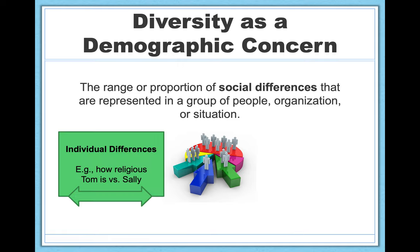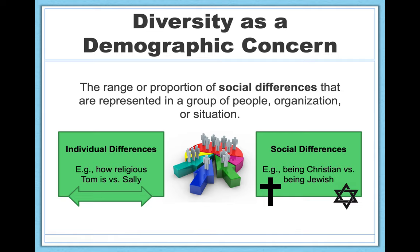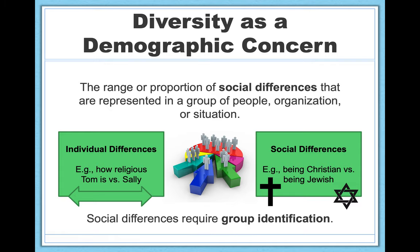So what do I mean by social differences? You've probably heard the term individual differences before, which is a dimensional approach to understanding differences between people. For example, how religious Tom is on a scale of one to ten versus how religious Sally is — these are individual differences. Social differences, in contrast, refer to categories of people — a categorical difference between social groups, like being Christian versus being Jewish. Social differences require group identification, like 'I identify as a Christian,' versus a dimensional score like 'I'm a seven out of ten in religiosity.'